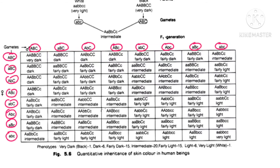You are getting: 1 very dark, 6 dark, 15 fairly dark, 20 intermediate, 15 fairly light, 6 light, and 1 very light. So your ratio is 1:6:15:20:15:6:1. This is the ratio you get when skin color is controlled by three genes.